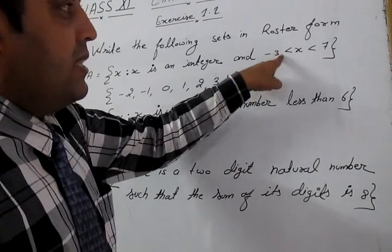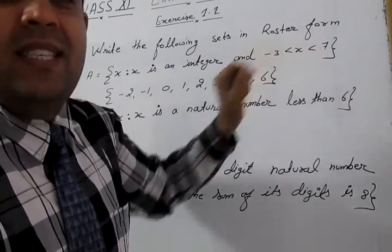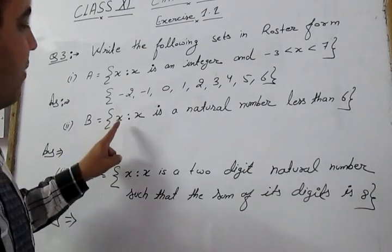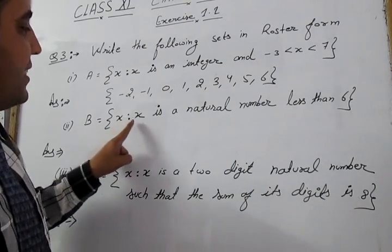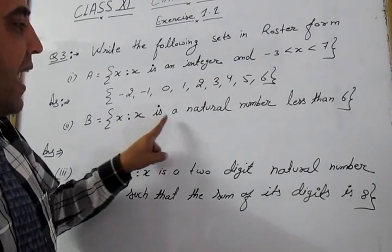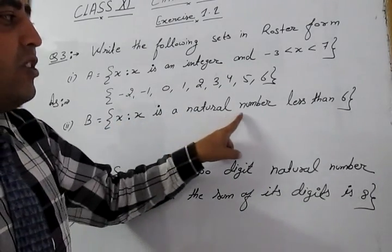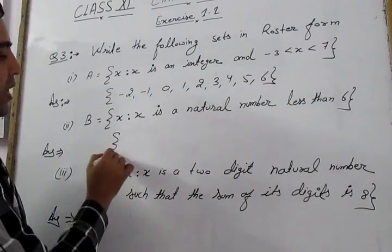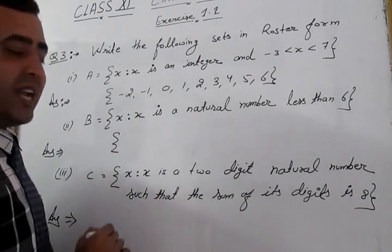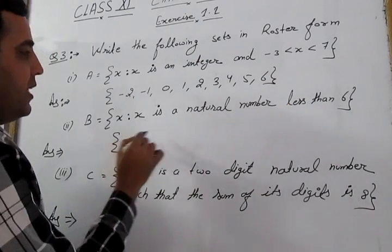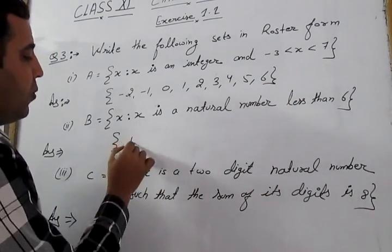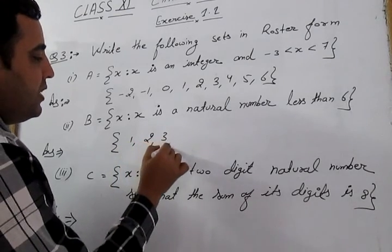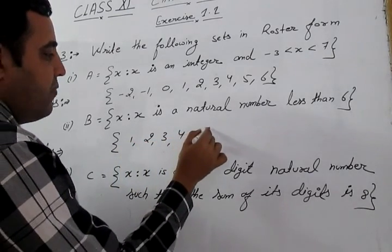Part B: B = {x : x is a natural number less than 6}. Natural numbers start from 1, therefore the roster form is {1, 2, 3, 4, 5}.